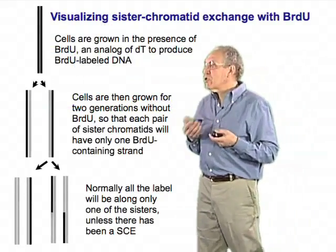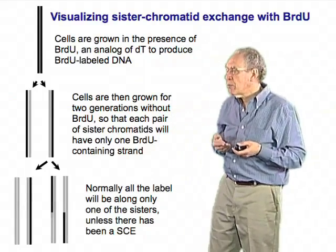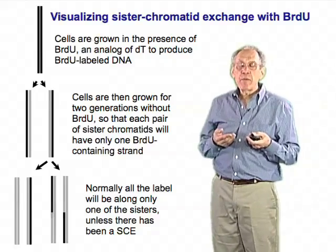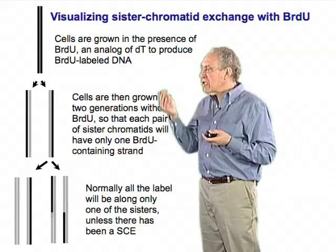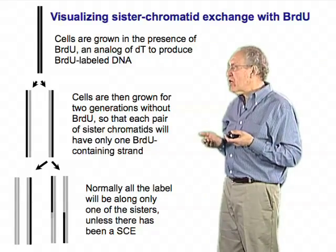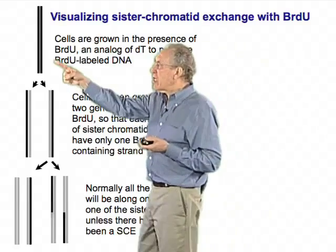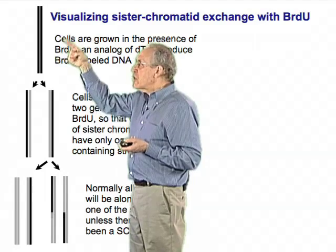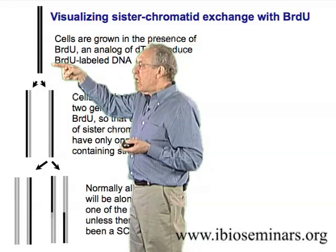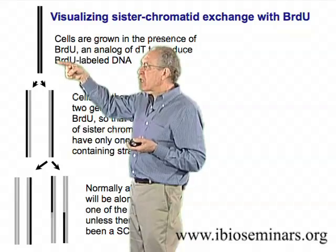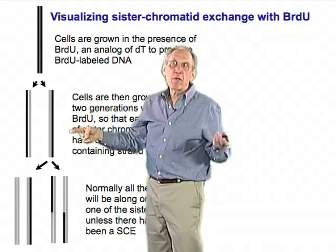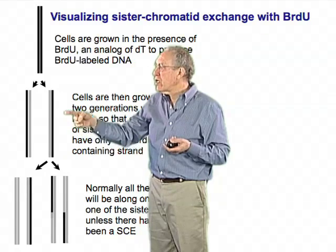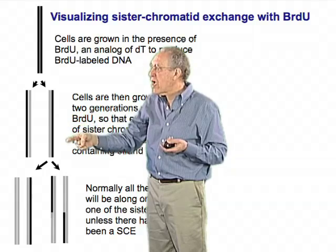We can visualize sister chromatid repair and sister chromatid exchange in mammalian cells in a fairly easy fashion. It turns out that you can grow cells in the presence of an analog of deoxythymidine called bromodeoxyuridine, and this will essentially incorporate bromodeoxyuridine at many of the sites where deoxythymidine would be placed during DNA replication. One ends up with a DNA molecule where all the strands carry a bromodeoxyuridine label. If you then remove the bromodeoxyuridine and allow the cells to go through another round of DNA replication, then as Meselson and Stahl first showed for E. coli,